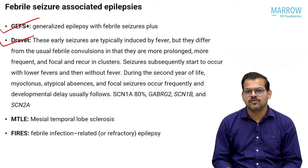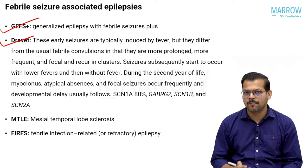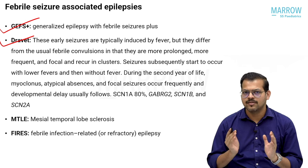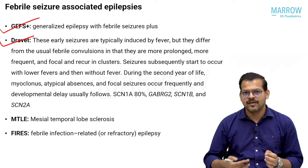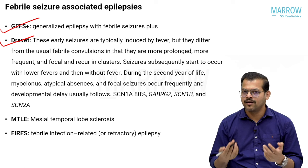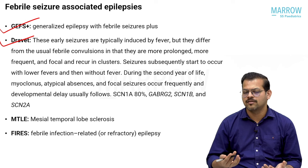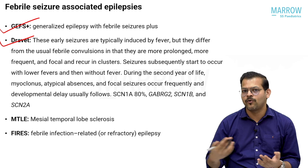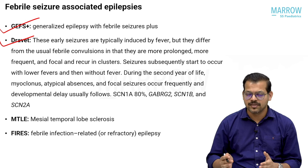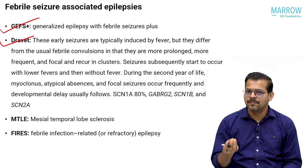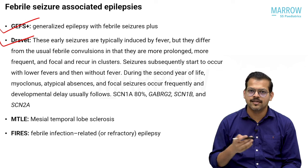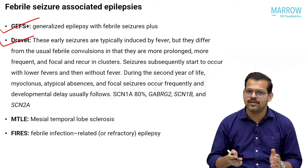Another important syndrome is Dravet syndrome. The typical presentation begins around 2 to 6 months of age, when the child develops a seizure after a fever episode — most often hemiclonic, not the generalized type seen in simple febrile seizures. This initial seizure often has a focal component and may be prolonged up to 30–40 minutes. Previously, seizure onset after vaccination led people to call this 'vaccine-associated encephalopathy,' but later studies showed these were in fact Dravet syndrome cases.